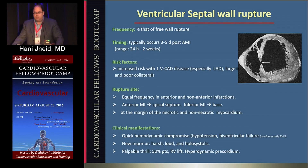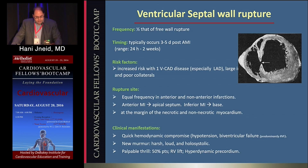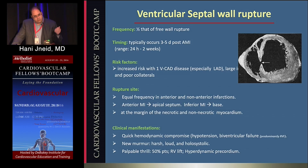Number two is ventricular septal wall rupture. This is less than half in frequency compared to free wall rupture. The timing is similar with a biphasic mode, usually occurring within three to five days but up to two weeks. Risk factors are very similar, with increased risk particularly with single vessel coronary artery disease, especially with a wrap-around LAD, which produces an apical ventricular septal wall defect. The rupture occurs in equal frequency with anterior and non-anterior infarction.